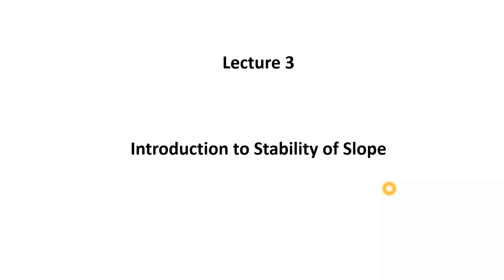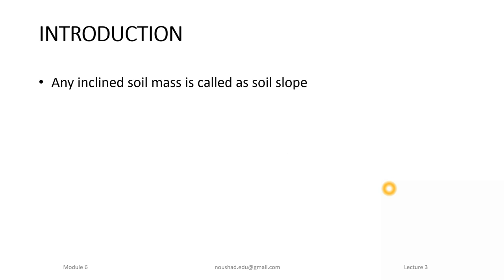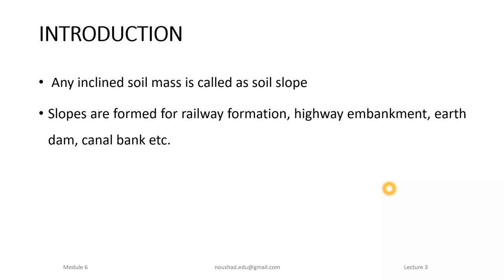In this lecture, Lecture 3, we are going to discuss the stability of slope. As an introduction, a slope is called any inclined soil mass. Slopes are formed for different purposes like railway formation, railway tracks, and highway formation.